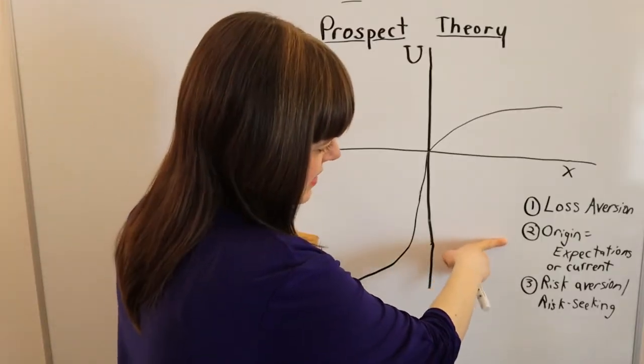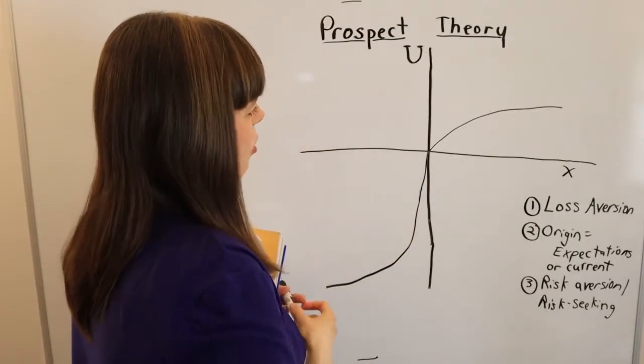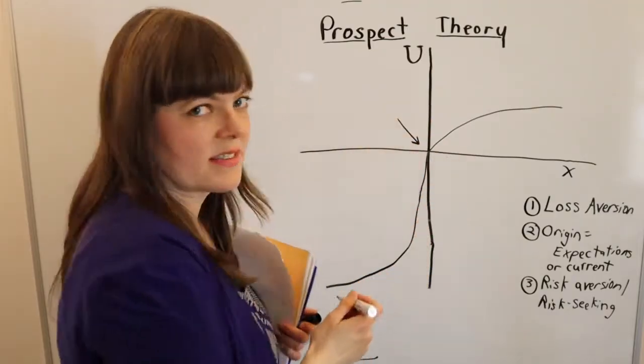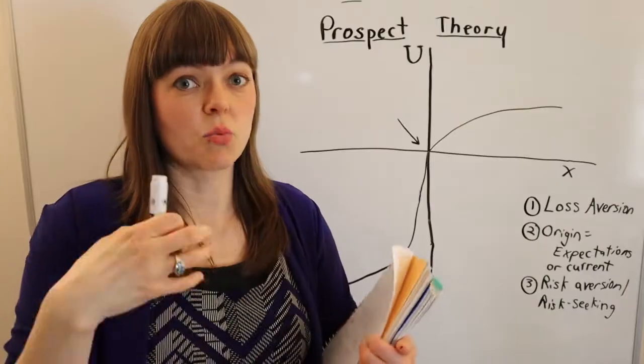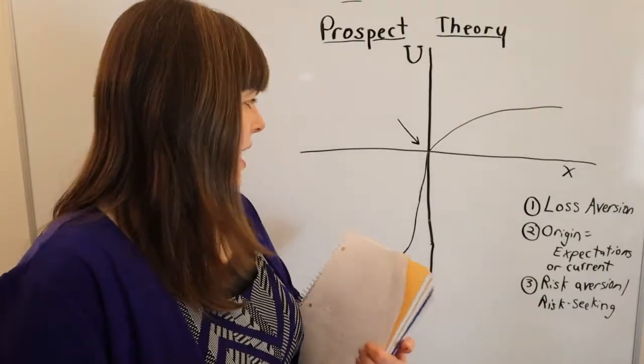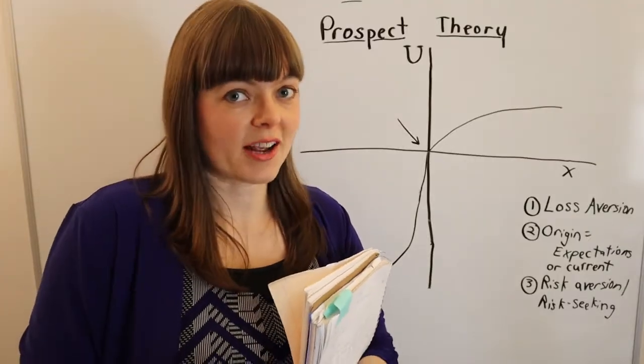Now, the second piece of this equation is what's at the origin. And when you're talking about the mug pen situation, what's at the origin is what you have, what you believe you will go away from the classroom with. But this can also just be your expectation.